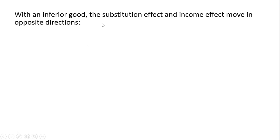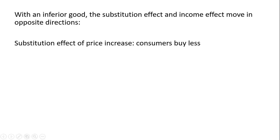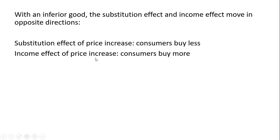With an inferior good, the substitution effect and income effect move in opposite directions. The substitution effect of a price increase is consumers buy less. The income effect of a price increase with an inferior good is consumers buy more.